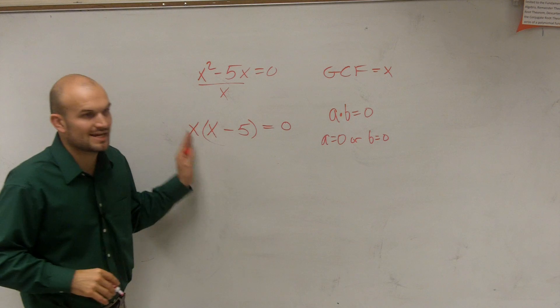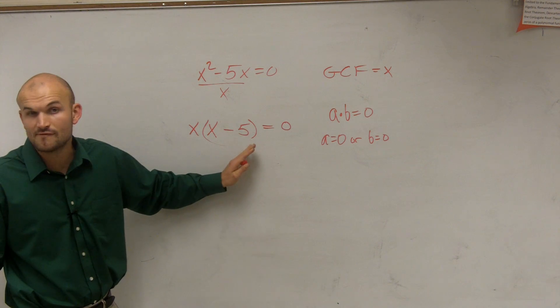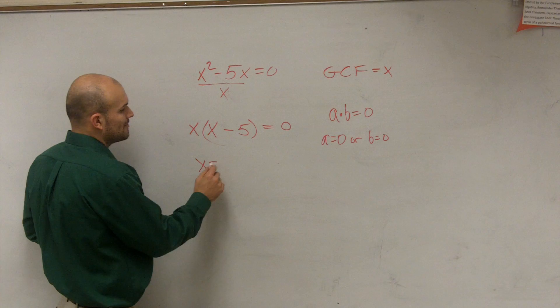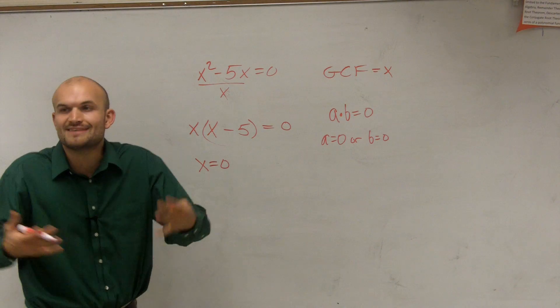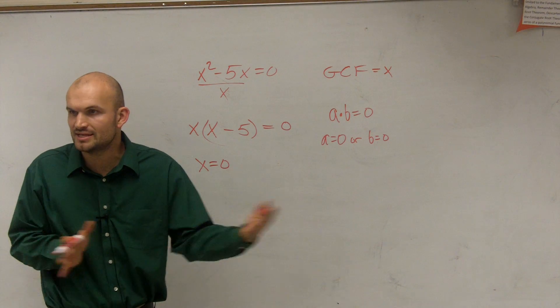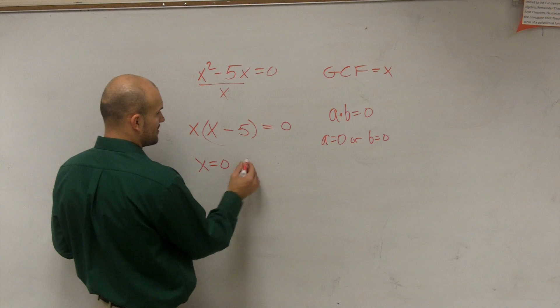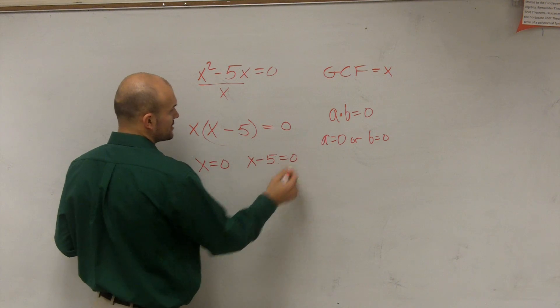So what we do is we take both of our terms, or both of our factors, and we set them equal to 0. Because remember, when I say solve, that means I want to find the value of x that makes the equation true. So therefore, I'm going to have x equals 0, and x minus 5 equals 0.